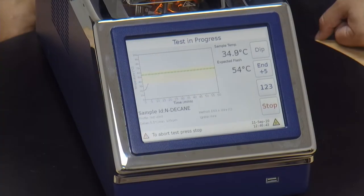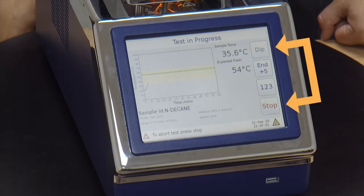I'd like to point out a couple different things you can see here on the screen. We have our expected flashpoint listed. Above it we have our sample temperature. On the side we have a dip button, a plus five degrees button, and a stop button along with a number button.